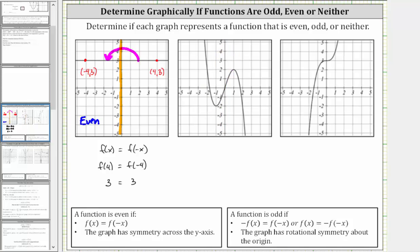Let's see if it's an odd function. To test for an odd function, we turn or rotate the graph about the origin. If it takes less than one complete rotation so the graph looks exactly the same, the graph has rotational symmetry about the origin. Notice for this graph, if we rotate it half a turn or 180 degrees, the graph would look exactly the same, and therefore it does have rotational symmetry about the origin. With half a turn, the right side of the graph would look like the left side, and the left side would look just like the right side. So this is an odd function.